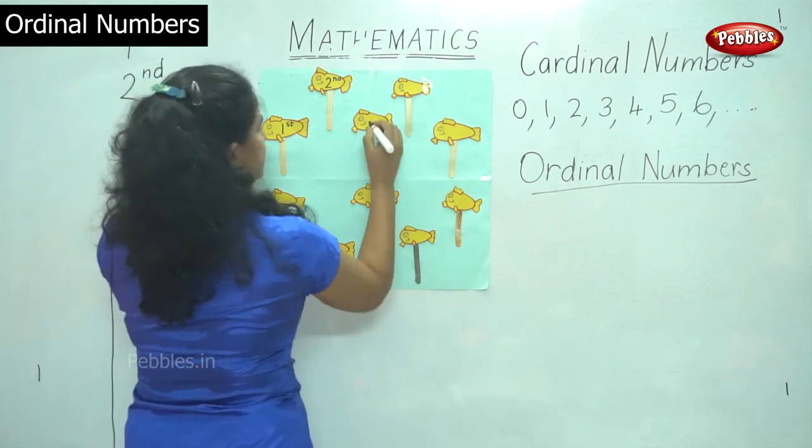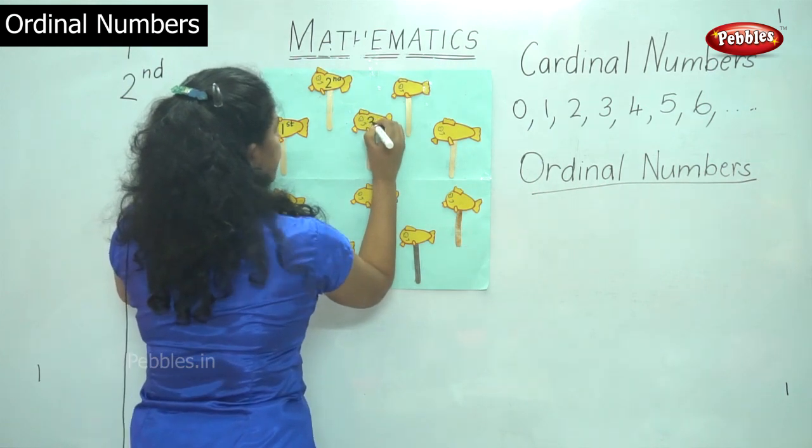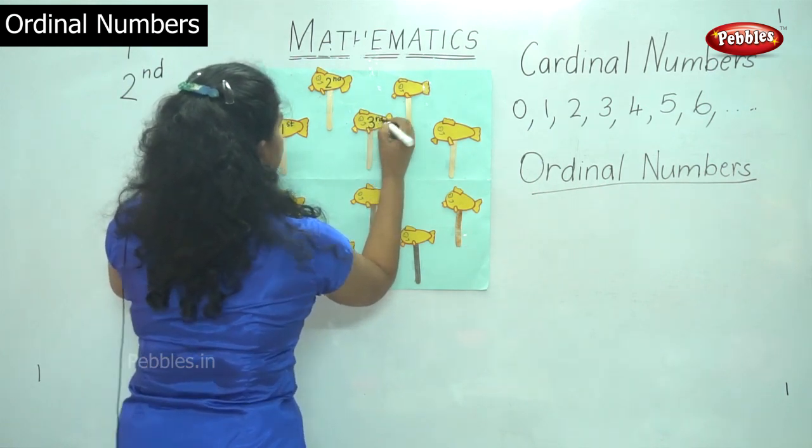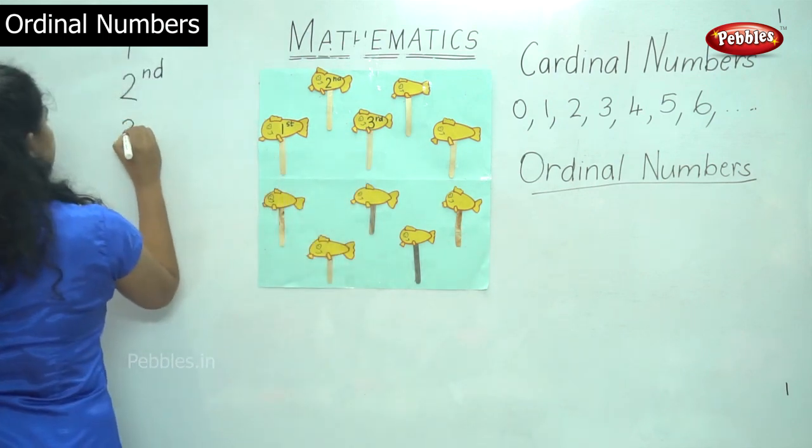For the third fish we don't say number 3, we say third. We write rd on top. So it is third.